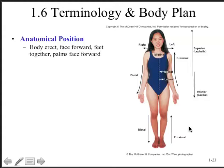Anatomical position is the position against which body movements and locations of organs will be judged throughout the rest of the course. When we talk about movement in the medial or lateral direction, or the anterior or posterior direction, or the superficial or deep, we're always referring relative to anatomical position. We assume this position when discussing the condition of a patient or the location of a manifestation of a disease process.